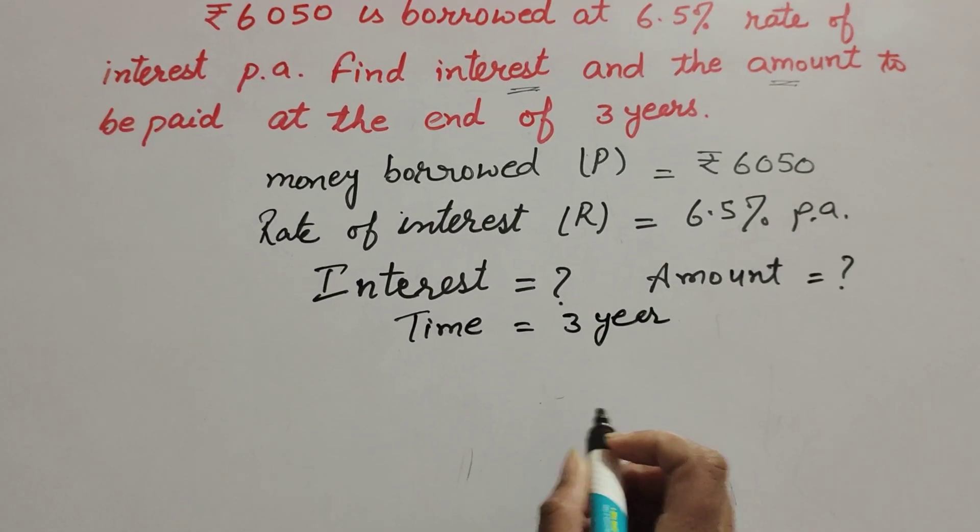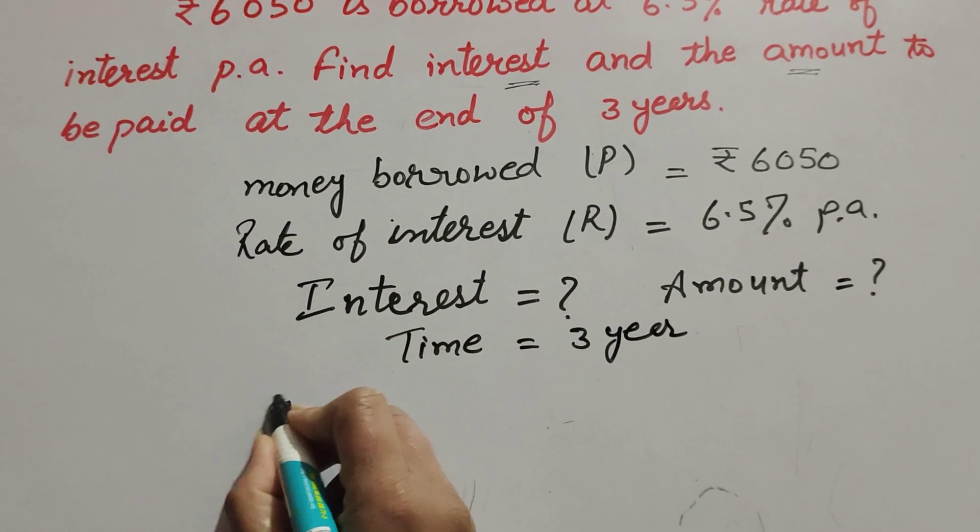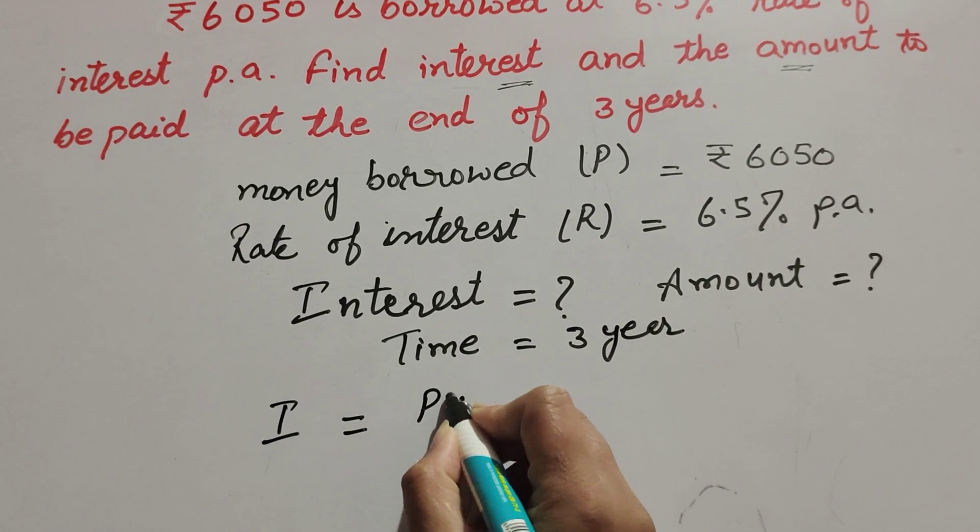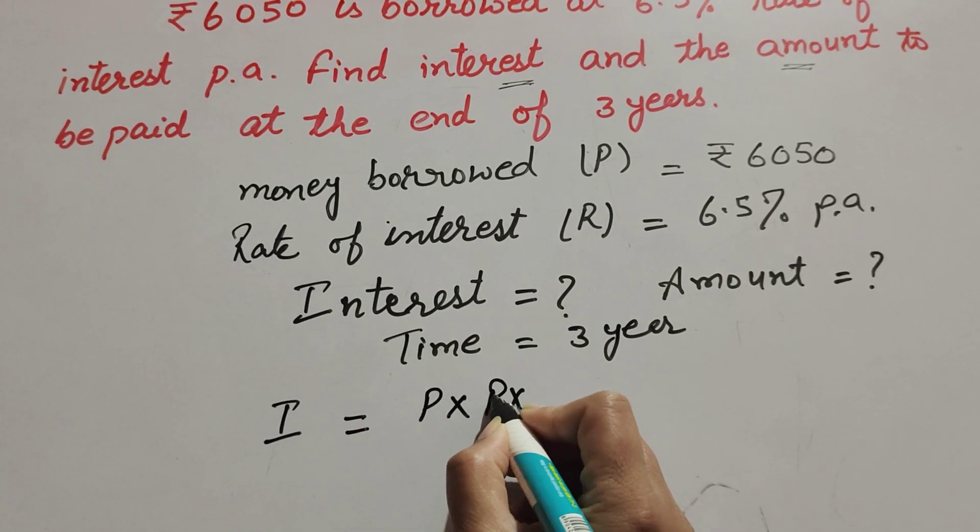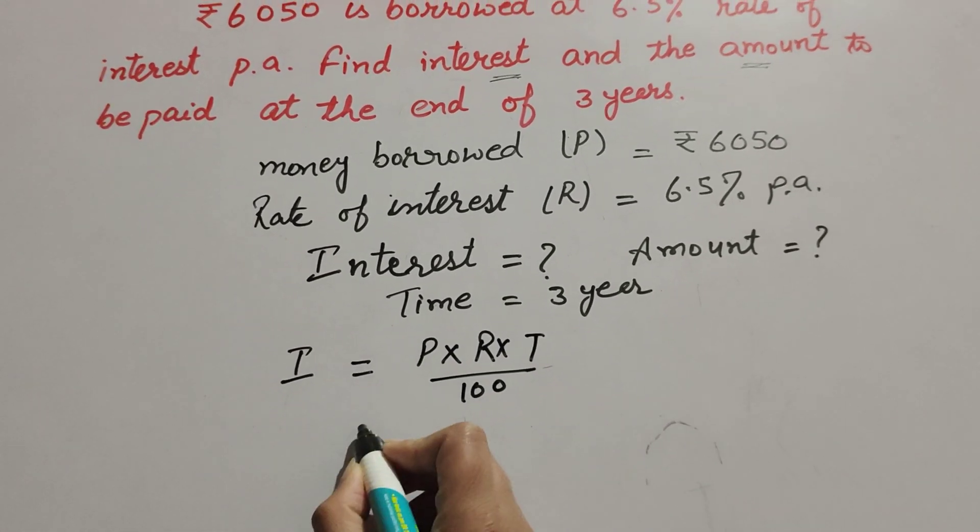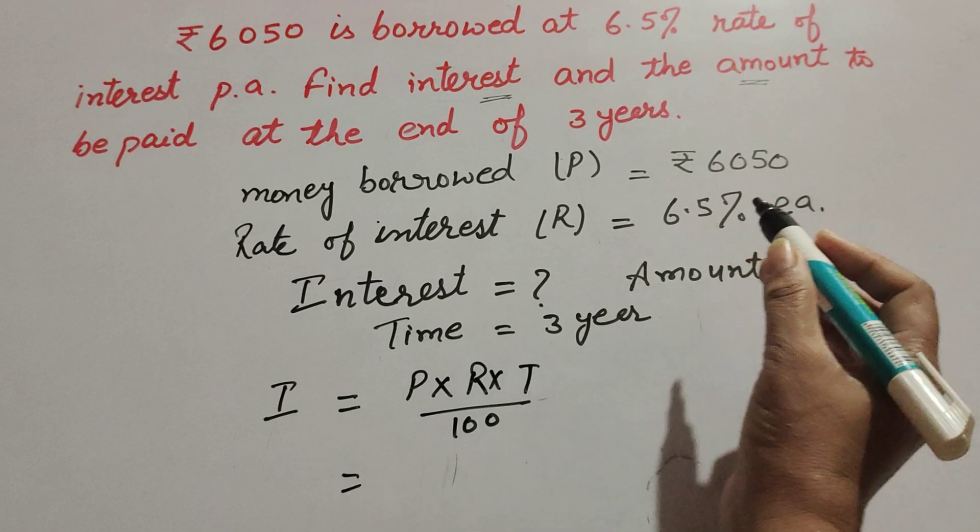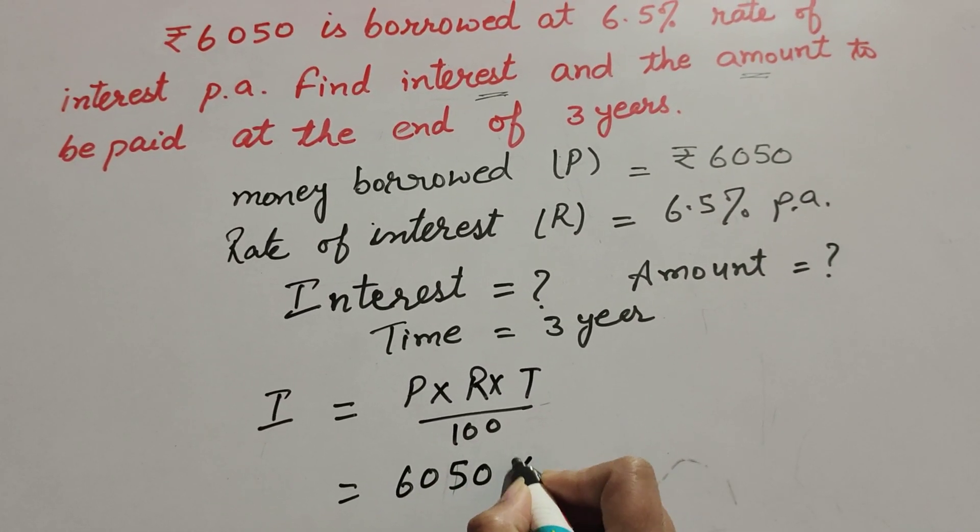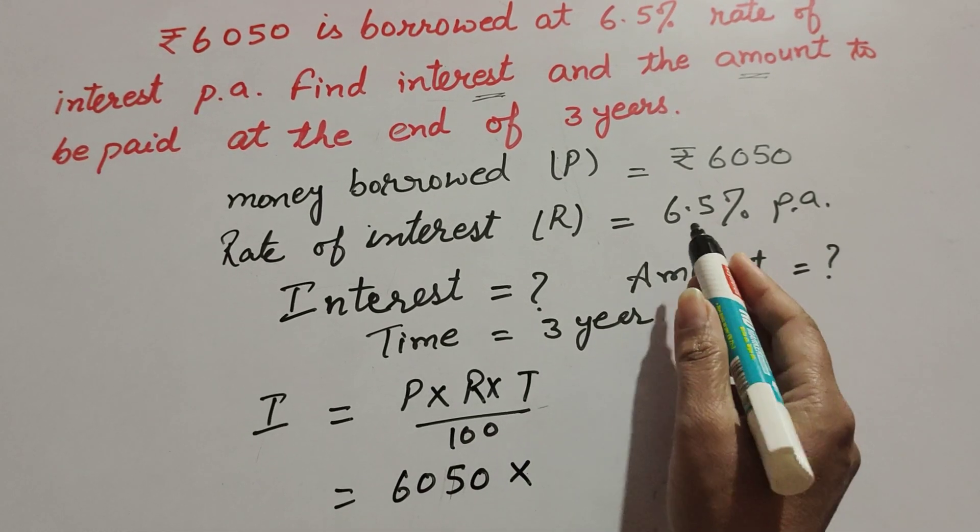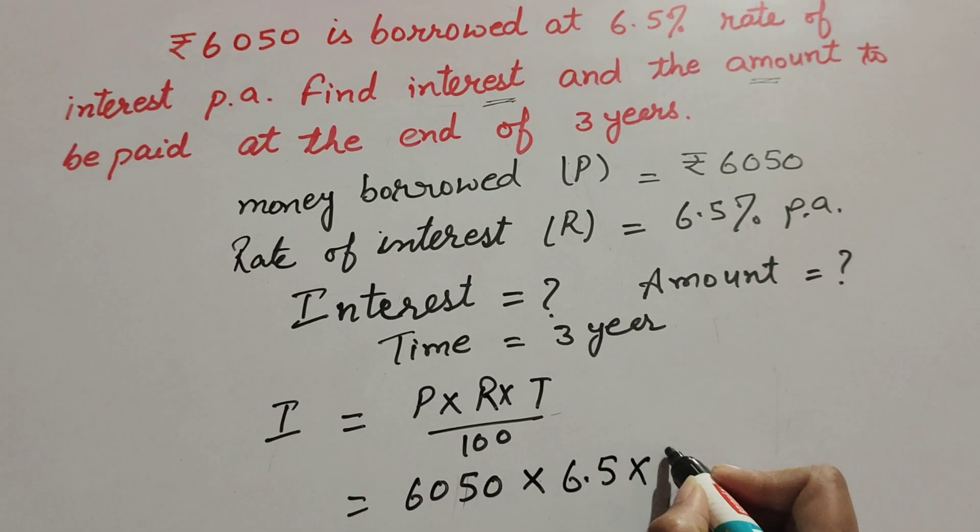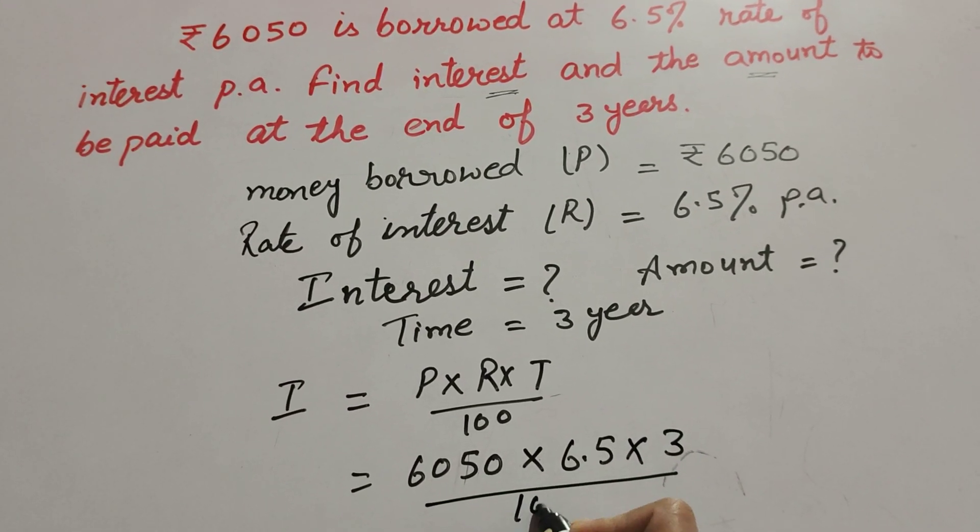So first we find the interest. To find the interest we know the formula, that is P times R times T over 100. So P is principal, it is equal to 6050, multiply R, R is rate of interest, it is 6.5, multiply time, time is 3, over 100.